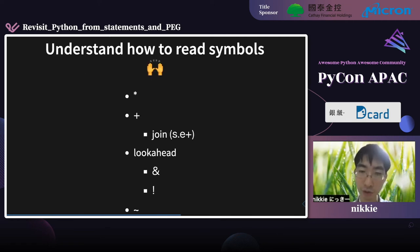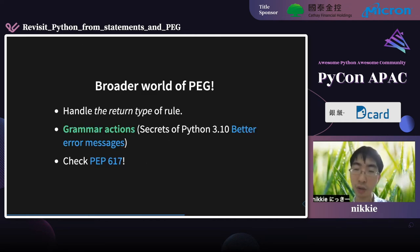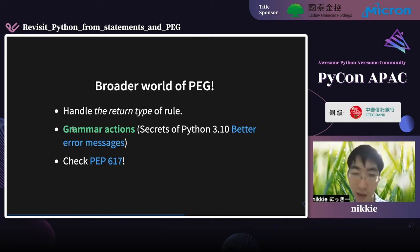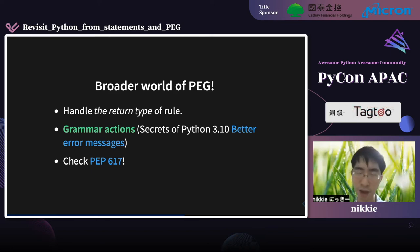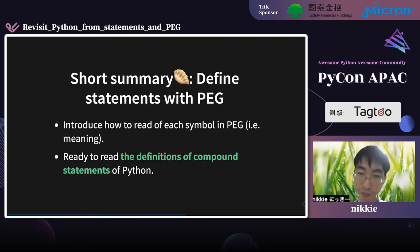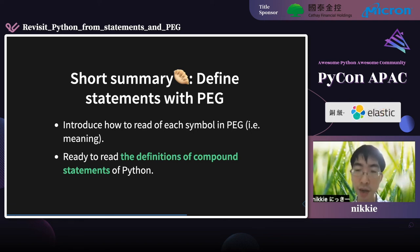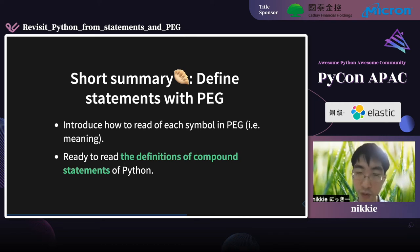So far I've introduced many symbols — this is only a small part of PEG. Grammar action is also amazing. The syntax error message has been improved since Python 3.10 — the secret is the grammar action. If you are interested, please take a look at PEP 617. These are the parts that define the statements. I have introduced how to read the meaning of each symbol in PEG — now you are ready to read the definitions of compound statements.